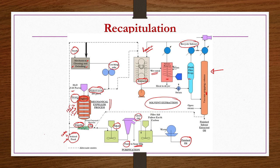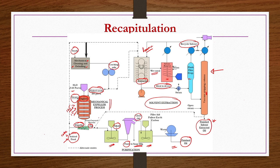After solvent extraction, the wet meal undergoes solvent removal via flash evaporation and vacuum stripping column. The recovered solvent is recycled back to the extraction column. The meal after solvent removal is taken to a toaster/desolventanizer or used as animal feed. From the vacuum stripping column, finished solvent-extracted oil is obtained from the bottom, and solvent from the top. This oil, called micella when still containing some solvent, is taken along with mechanically extracted oil for purification.